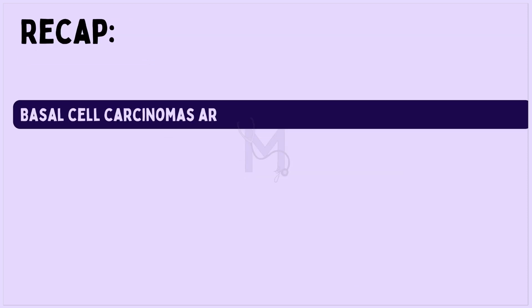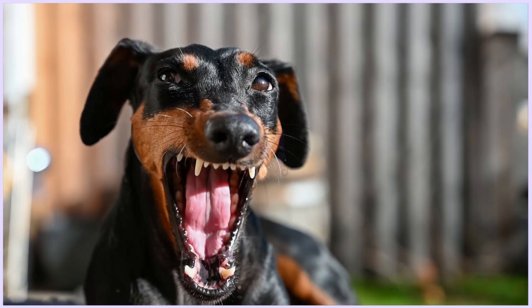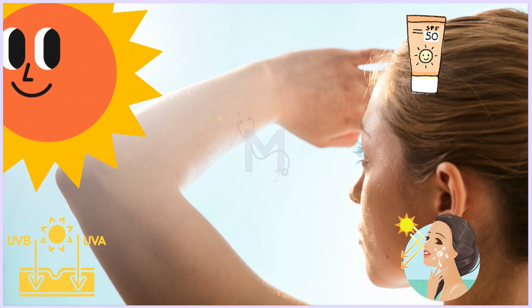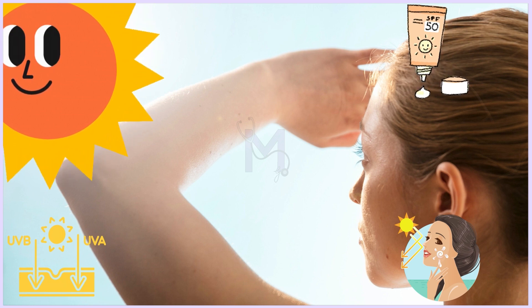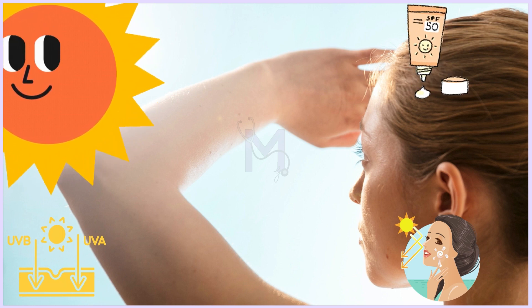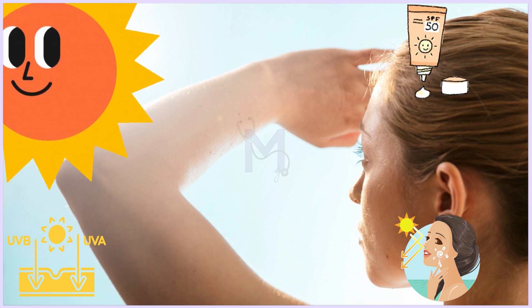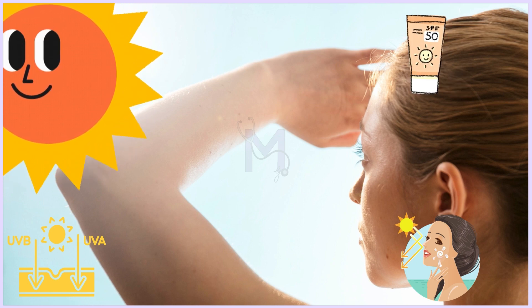Basal cell carcinomas are not as innocent as we tend to believe. Although known to cause minimal damage, they can be unpredictable and turn aggressive very quickly. The most effective way to prevent skin cancers is by limiting overexposure to UV radiation from the sun, covering exposed areas, and regular usage of sunscreen.